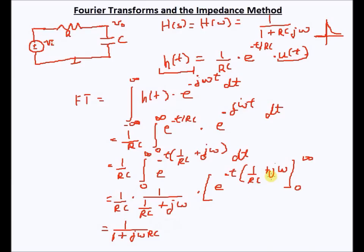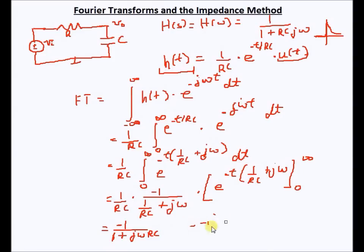Substituting the limits: at infinity, the exponential goes to zero; at zero, the exponential gives minus one. The two minus signs cancel, so my final answer is 1 over (1 + jωRC).